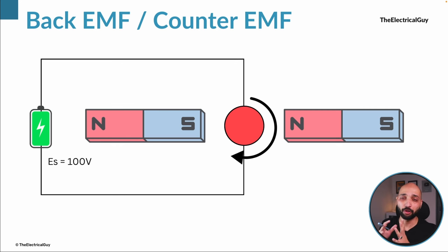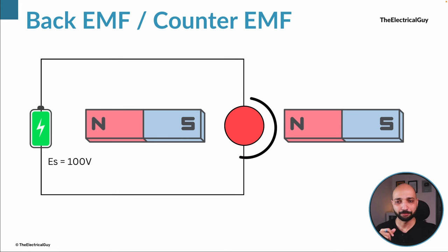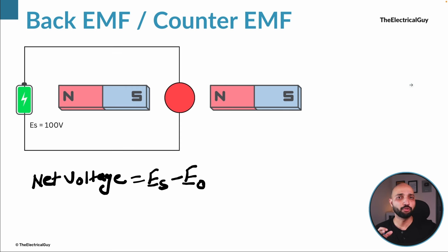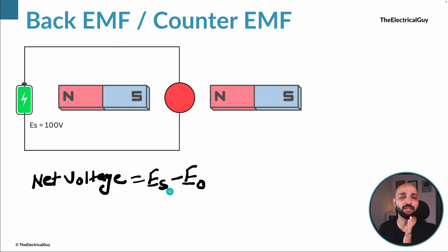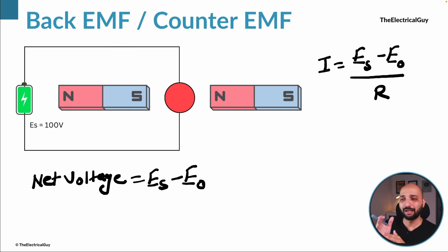This back EMF is of key importance in the case of a DC motor, because if it is not there it can completely damage the motor and the system connected to it. Since the back EMF acts in the opposite direction to the supply voltage, the net voltage across the armature is Es minus E0. The resistance of the armature is very small, so the armature current can be calculated as: current = (Es − E0) / armature resistance.